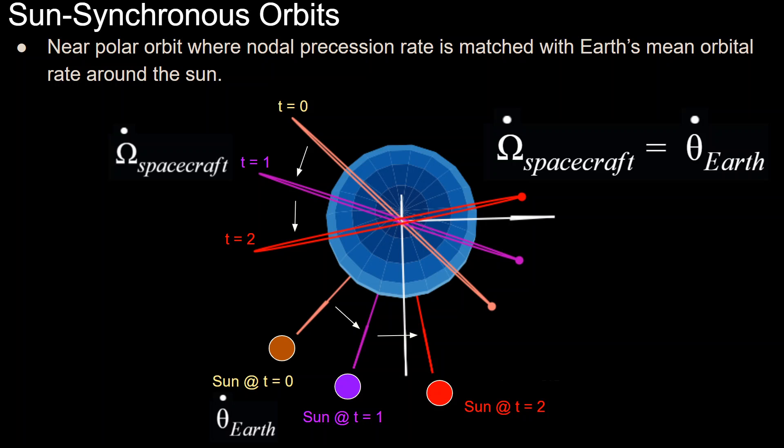You have a sun-synchronous orbit when the rate of change of the right ascension, due to the J2 perturbation, is equal to the rate of change of the true anomaly of the Earth. This means that the angle between the vector from the sun to the Earth and the vector normal to the orbital plane remains constant at all times.